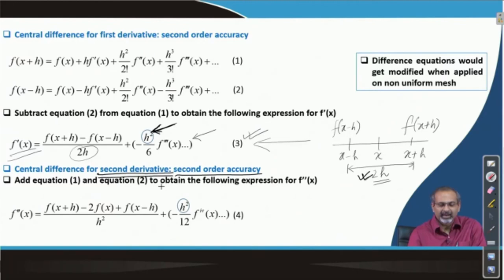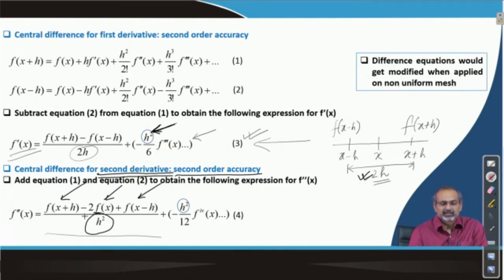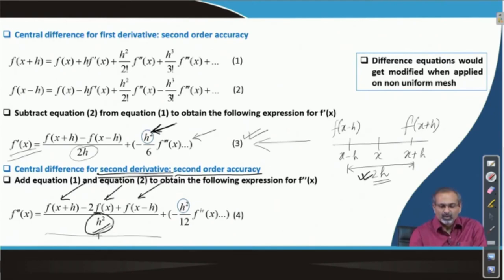If you add the two Taylor series equations and transpose the terms, you reach the result — the equation for the second order derivative with second order accuracy. You now have three points in the stencil: you need the functional values at x, at x minus h, and at x plus h. Note that the denominator contains h squared terms, unlike the earlier expressions for the first derivative which contained h terms. The leading error term in the truncation error has an h squared term, and therefore you have the desired second order accuracy.